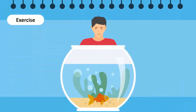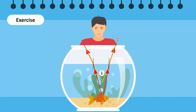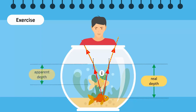Two incident rays upon entering the air from water bend away from the normal. The refracted rays reach the viewer's eyes. When these refracted rays are traced back, they meet at a point, and thus a virtual image of the fish is formed. The depth from the position of the fish to the surface of water is real depth, while the distance from the image of the fish to the surface of water is apparent depth.